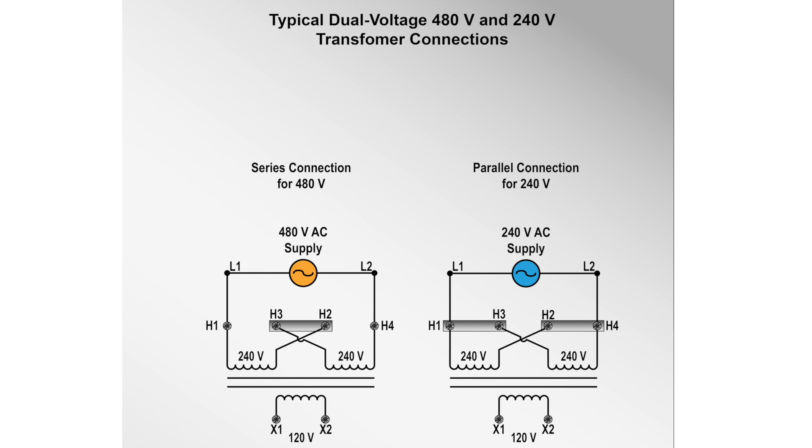If the transformer is used to step down 480 volts down to 120 volts, the primary windings are connected in series by a jumper wire or metal link. If the transformer is used to step down 240 volts down to 120 volts, then the primary windings are connected in parallel with each other.